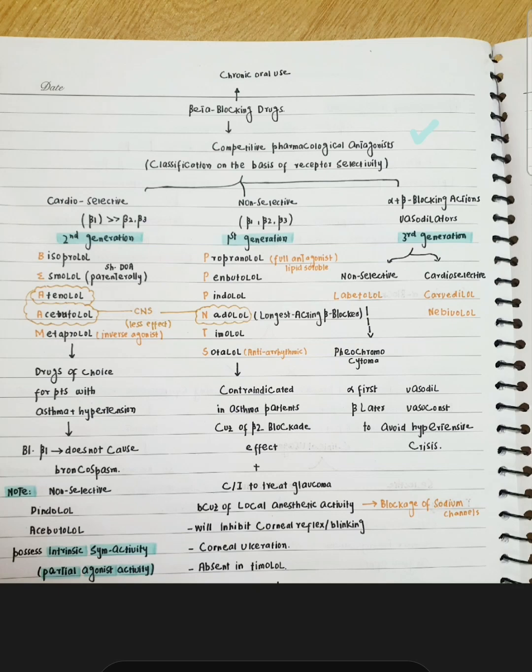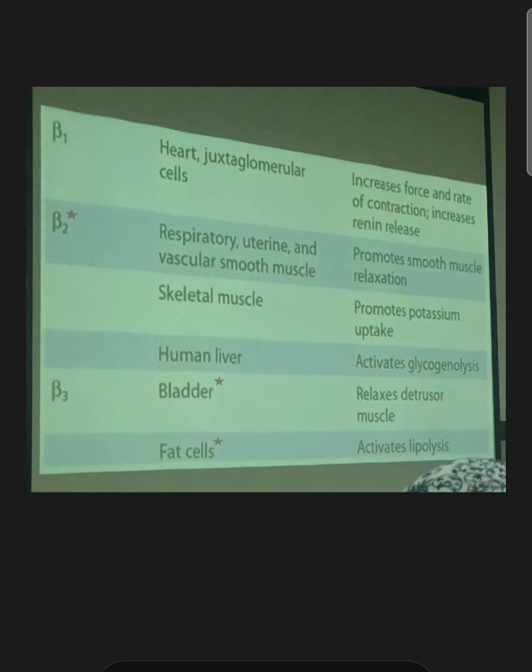Before we start a detailed discussion on beta-blocking drugs, let's review the functions of beta-1, beta-2, and beta-3. Beta-1 acts on the heart and juxtaglomerular apparatus, increasing the force and rate of contraction and increasing renin release. Beta-2 primarily acts on vascular and non-vascular smooth muscles like the uterus and respiratory tract, causing smooth muscle relaxation by vasodilation.